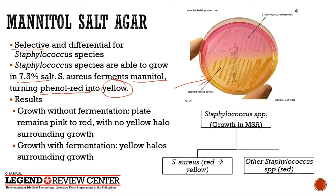Results: growth without fermentation shows colonies but the surrounding color remains pink or red; growth with fermentation, as in Staph aureus, produces colonies with surrounding yellow halos. This is another way to differentiate Staph aureus from other staph, similar to the coagulase test.